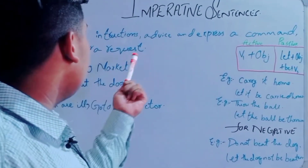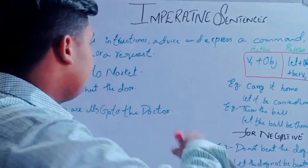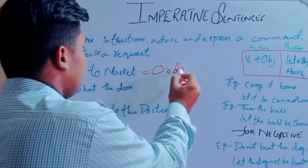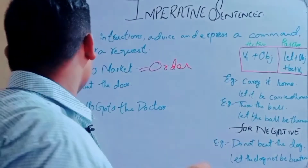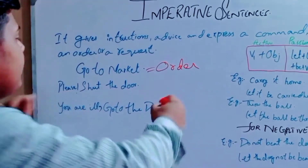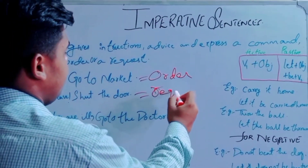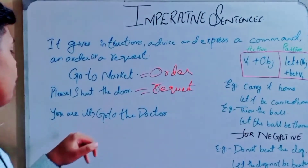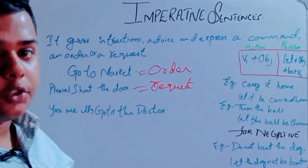Imperative sentences give instructions, orders, or requests. For example: 'Please shut the door' — this is a request. 'Go to the doctor' — this is a suggestion or advice.